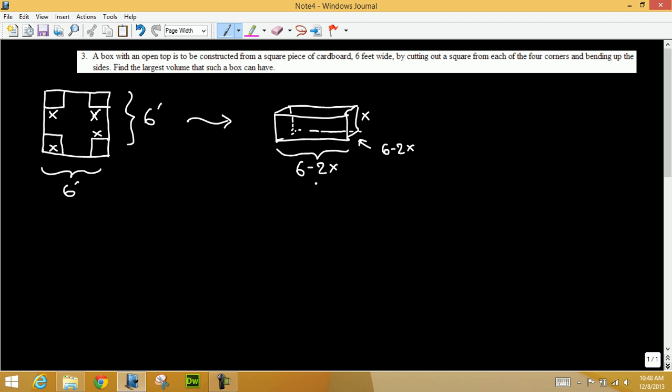Now we want to maximize the volume, so the objective function is the volume. V as a function of X is length times width times height, so six minus two X times six minus two X times X. Now you multiply six minus two X with six minus two X, you can FOIL and then multiply by X.